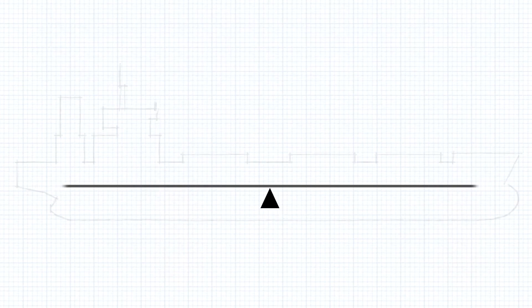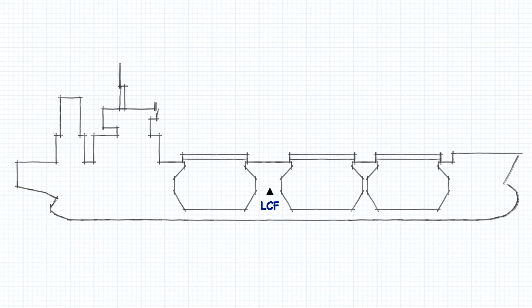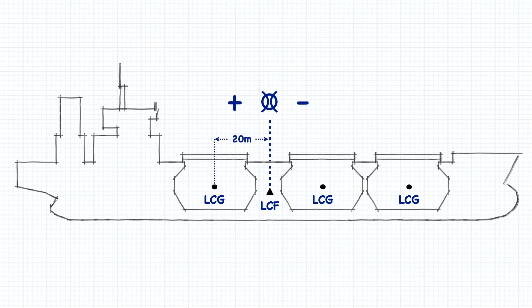The same principle can be applied to your ship. As we already know, a ship pivots or trims around its center of flotation. Let's assume that this ship's center of flotation is at midships. For each cargo hold, the position of its center is measured and recorded in the stability book. For number 3 hold, the longitudinal center is 20 meters aft of midships. For number 2 hold, the center is 20 meters aft of midships, or negative 20 meters. And number 1 hold is 60 meters aft of midships, or negative 60 meters.